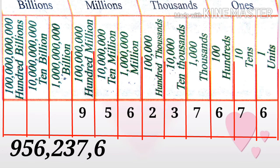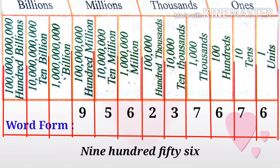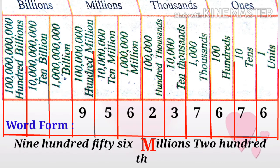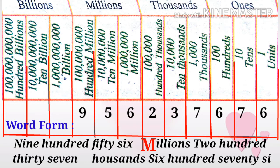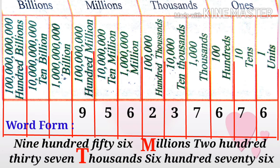After the comma we write 2, 3, 7, then another comma, and then 6, 7, 6. Now to write it in word form: nine hundred fifty-six millions, two hundred thirty-seven thousands, and six hundred seventy-six. This is the word form in the international system.